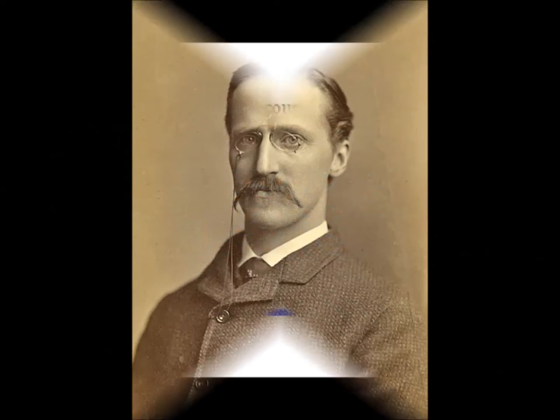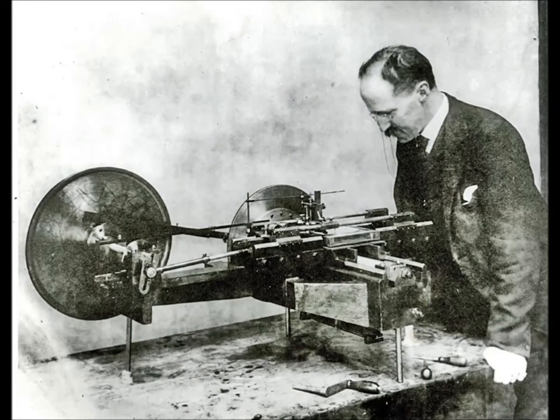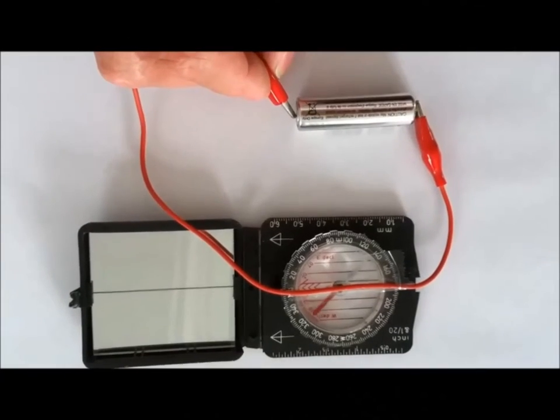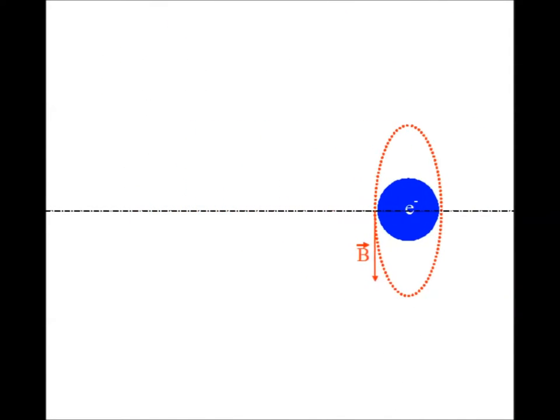In 1875, the American physicist Rowland discovered that a rotating electrically charged disk has a magnetic field. These two experiments seem to prove that the magnetic field is a result of electron translation. Is that true?